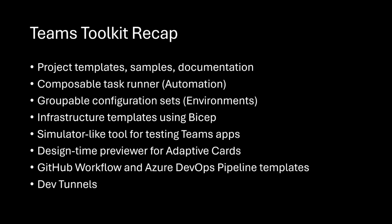So just to recap if you weren't able to join me last week: Teams Toolkit is a set of things for developers. It's project templates, samples, documentation. We have a task runner to help automate a lot of the tedious setup needed. You can group those configurations in what we call environments. We have infrastructure templates so you can host tab apps or bot apps in Azure, and we use Bicep for that. We have a simulator-like tool for doing local development that we call the Teams App Test Tool, and then we have a design-time previewer that we call the adaptive card previewer. So you can design adaptive cards, which are the things you can use to display UI inside of your chat elements for agents and bots.